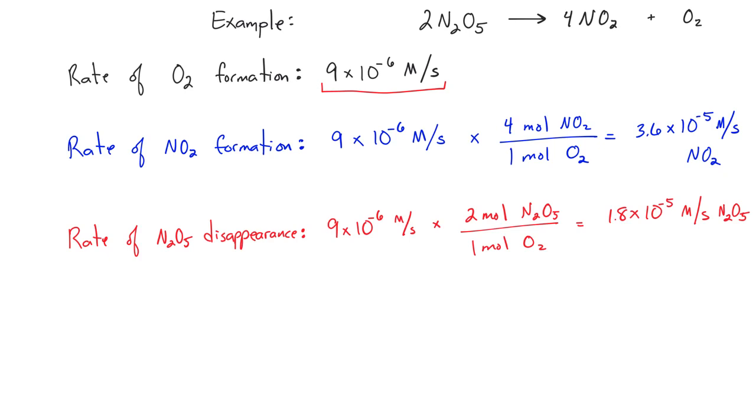Now, these experimental data are given to us in the problem, so we are accepting that 9 × 10⁻⁶ molar per second is the rate of O2 formation. In subsequent videos, we're going to look at how to go from experimental data to deriving this number.